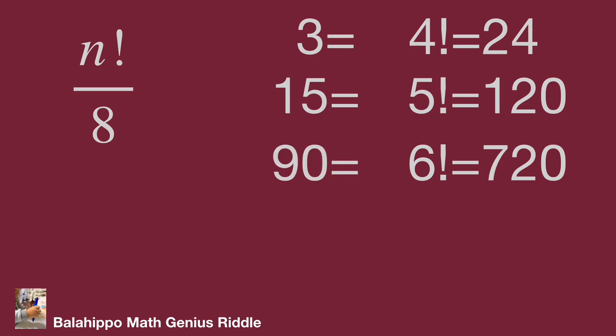While n factorial is larger than 6 factorial, n factorial over 8 becomes an even number. So n factorial must be less than 6 factorial. From here, we have two possible solutions: n equals 4 or n equals 5.